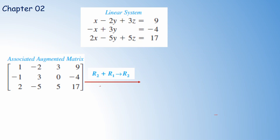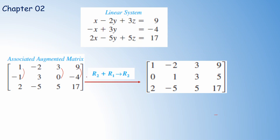We apply row operations separately. For the second row, to make the entry 0, we multiply the first row by 1 and add into the second row: R2 plus R1 gives new R2. Since we are not multiplying R1 by any number, we just add: 1 plus minus 1 is 0, minus 2 plus 3 is 1, 3 plus 0 is 3, and 9 plus minus 4 is 5. The third row remains as it is.